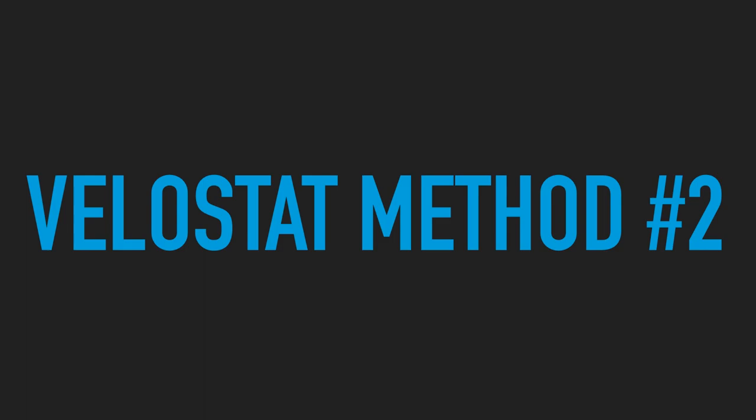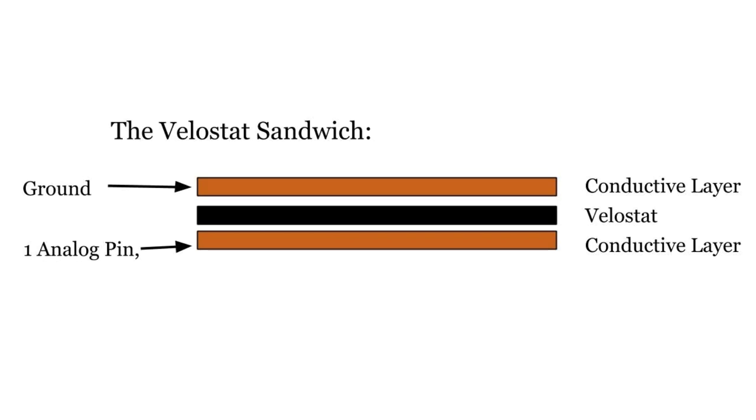So let's talk about the second method, which is basically pretty much the same as the first method, but with some subtle differences. All of these are pretty much the same. You have a conductive material on two sides of the sensor, and then you have the Velostat in the middle, which will change its resistance when the mechanism that you create pressurizes the Velostat.